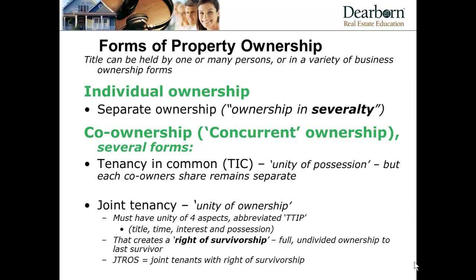The first type of ownership is individual ownership. Here there's another legal term that is counterintuitive: individual or separate ownership is called ownership in severalty. At first you might think of several people, but the root relates to 'sever' — it's cut off, just one piece that one person owns. So ownership in severalty refers to a single person or single business owning the property.